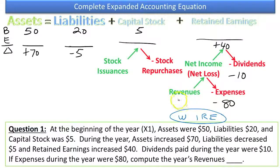If we knew the net loss, we could solve for revenues, but we don't. But we do know that retained earnings increased by $40, and we know that the change in retained earnings is going to be equal to net income minus dividends. We know the change in retained earnings is $40. Net income, we don't know yet, but we do know that dividends are $10. Something minus $10 equals $40, and that would have to be $50. Net income must be $50.